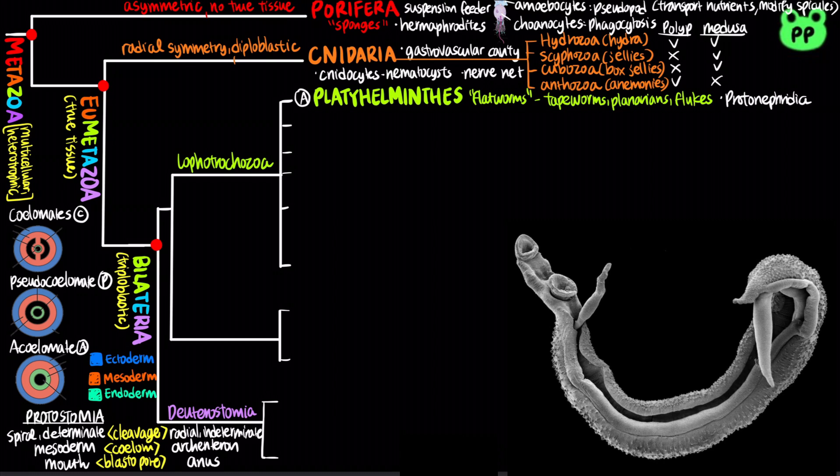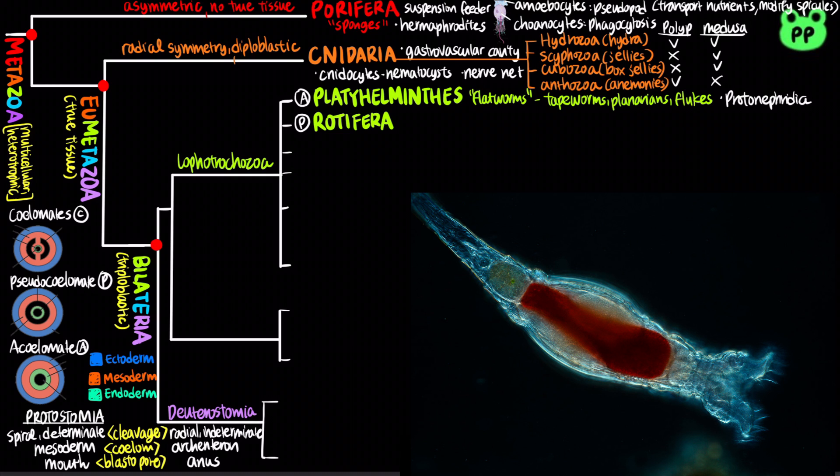The phylum Rotifera includes tiny animals that inhabit fresh water, the ocean, and damp soil. They are pseudocoelomates. They have an alimentary canal — a digestive tube with a separate mouth and anus — that lies within the fluid pseudocoelom.